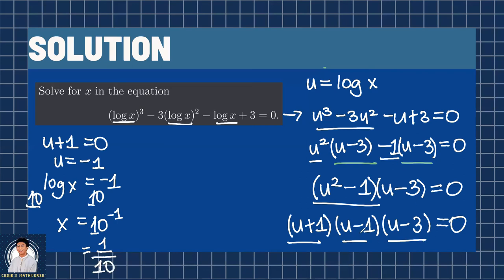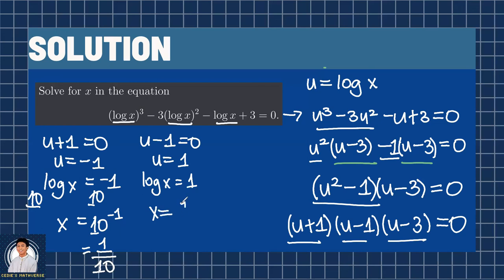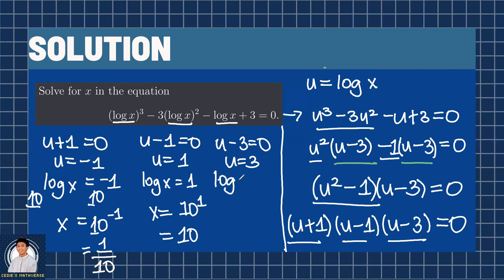The same thing can be done with the remaining two factors. For u minus 1 equals 0, u equals 1, so logarithm of x equals 1. Raising both sides by 10, we get x equals 10 raised to 1, which is equal to 10. Lastly, for u minus 3 equals 0, u equals 3, so logarithm of x equals 3, and x equals 10 cubed, which is 1,000.